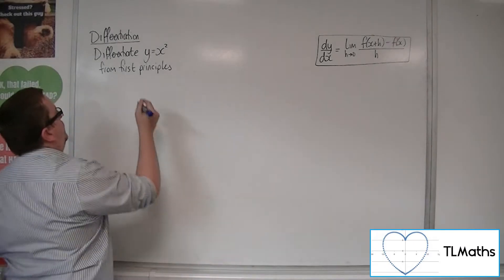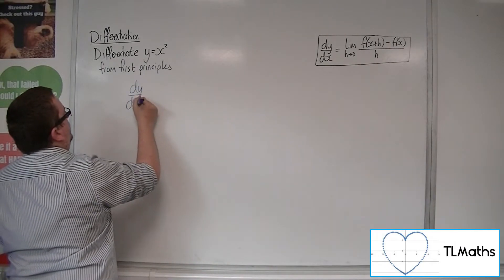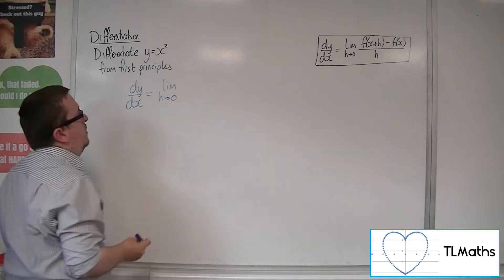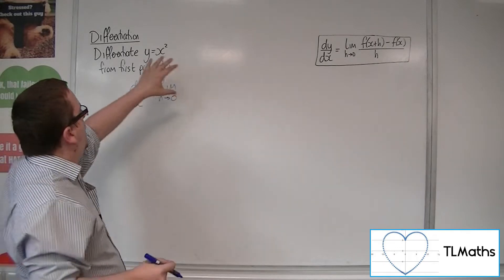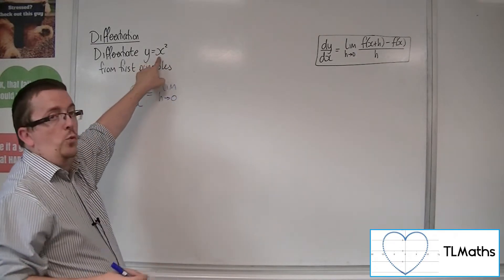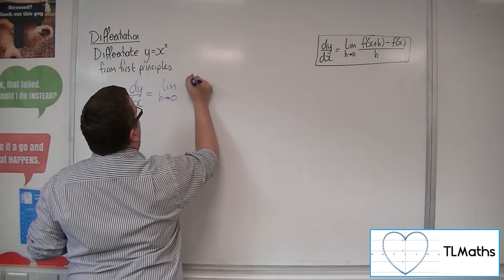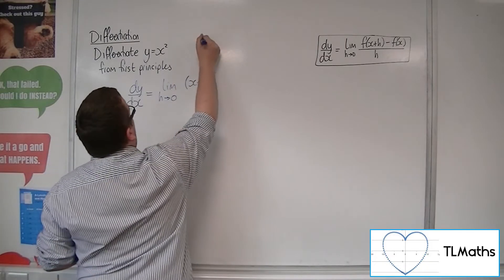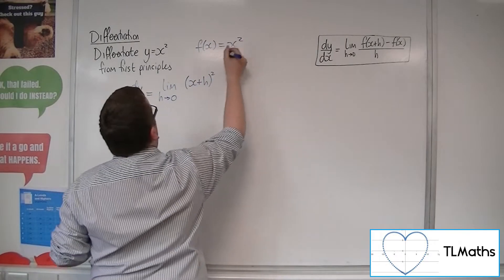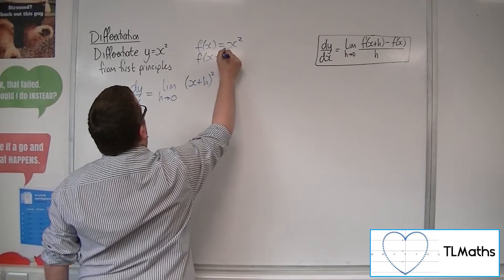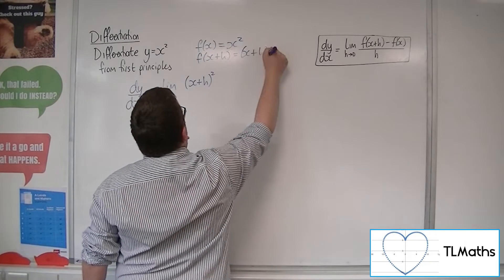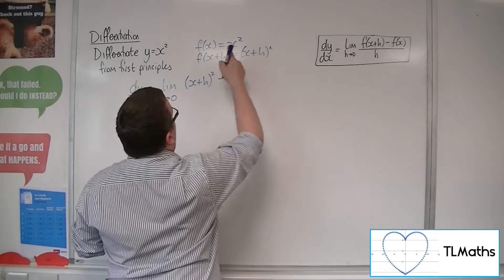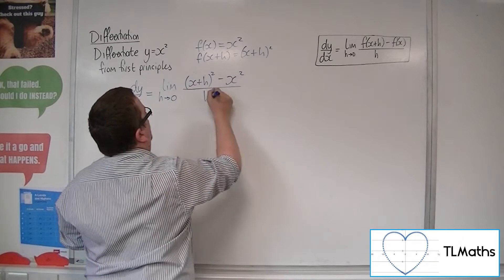First of all, dy by dx is equal to the limit as h tends to 0 of f of x plus h. Now f of x is x squared, so this will be x plus h, all squared. So f of x is x squared, f of x plus h is x plus h squared. We've got take away f of x, so take away x squared, all over h.